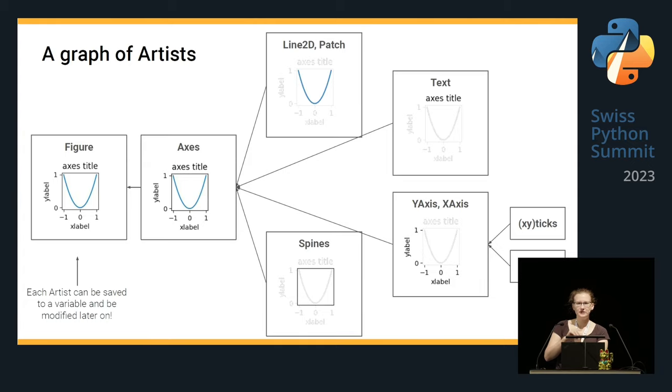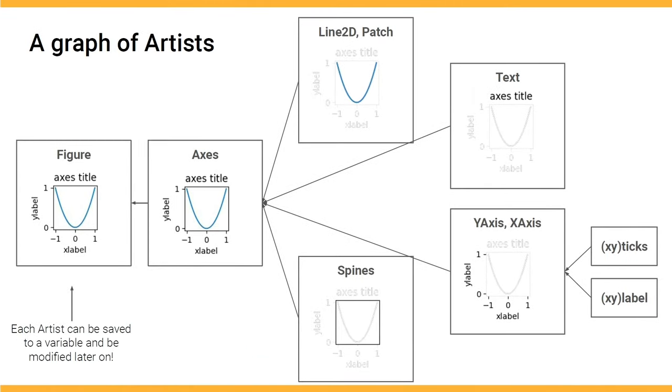How Matplotlib is storing information about the artist in a chart is that it stores it in a graph. So, you have the topmost container, a figure. Inside, you have the axis. And inside, you have children artists. So, you have the line or a part or a rectangle, which represents your data. You have various text elements. You have the spines. You have the axis, y and x, which contain sticks and labels. And each artist can be also saved to a variable. And you can use this to modify the appearance of them later on.